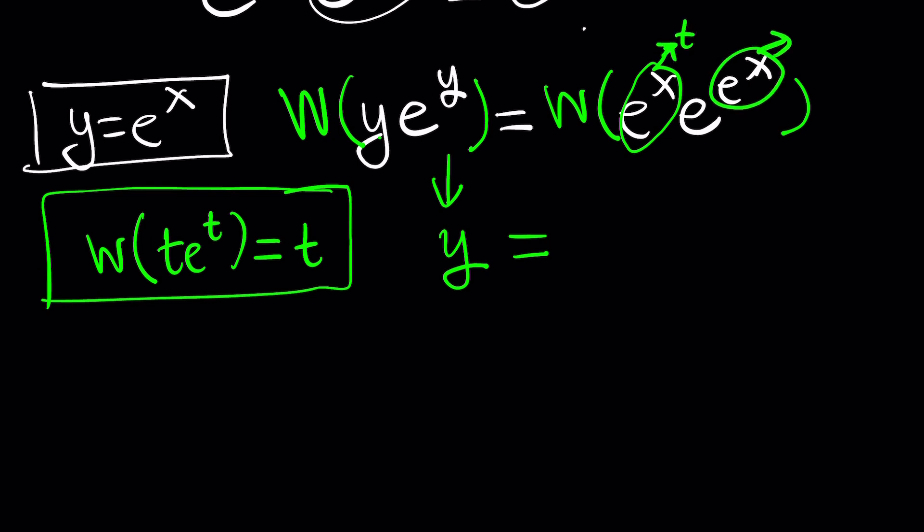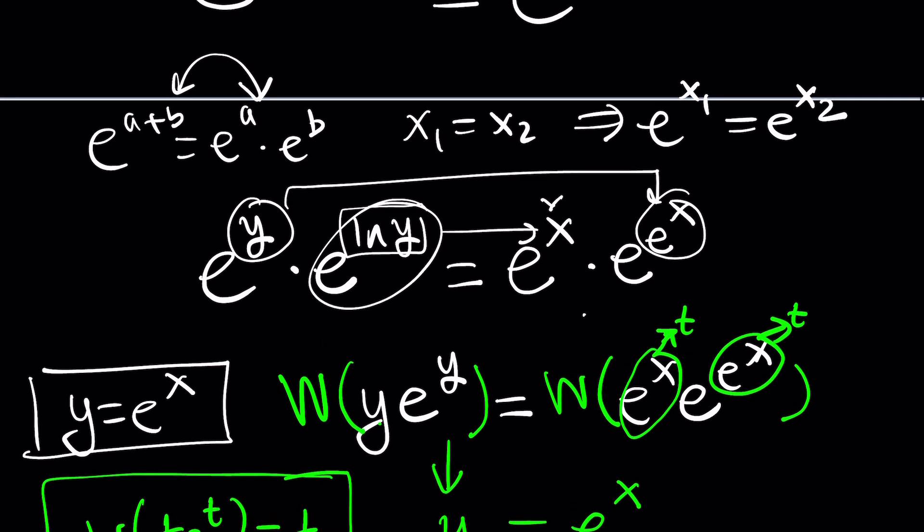Because this will give you t times e to the t. Make sense? So that should be t which is e to the x. Wow, that's amazing isn't it? So we got y equals e to the x as an answer. But even without Lambert's W function we were able to get that.